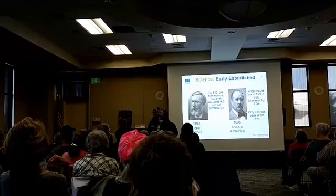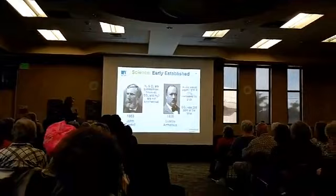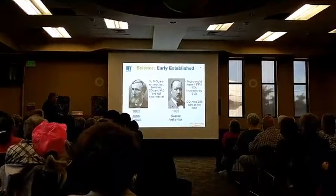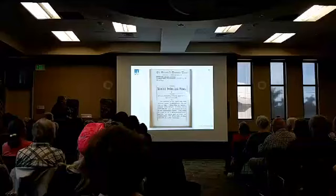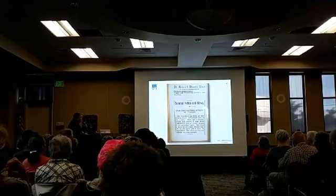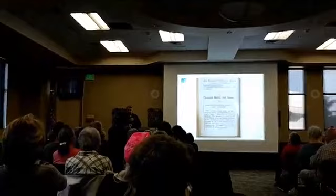Then Svante Arrhenius from Sweden — we still use a lot of his equations at Diablo Canyon in the chemistry lab. Both were geniuses, way in front of the science. About 100 years ago, Arrhenius wrote: 'The furnaces of the world are now burning about 2 billion tons of coal a year. When this is burned and united with oxygen, it adds around 7 billion tons of carbon dioxide to the atmosphere yearly. This tends to make the air a more efficient blanket for the Earth and to raise its temperature. The effect may be significant in a few decades or a few centuries.' He wrote this more than 100 years ago.